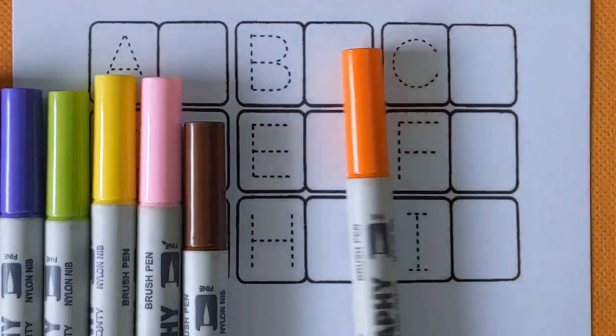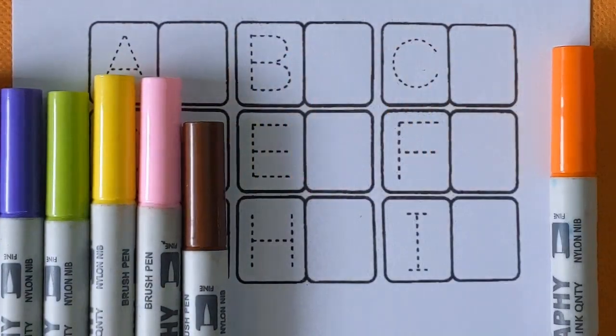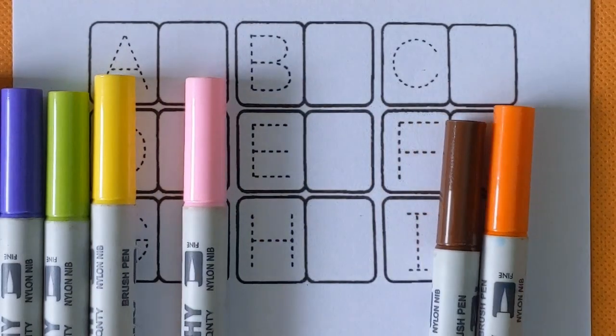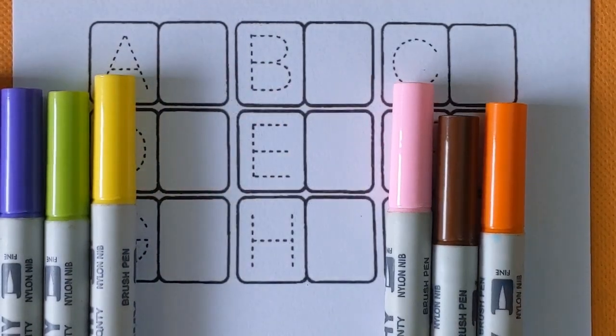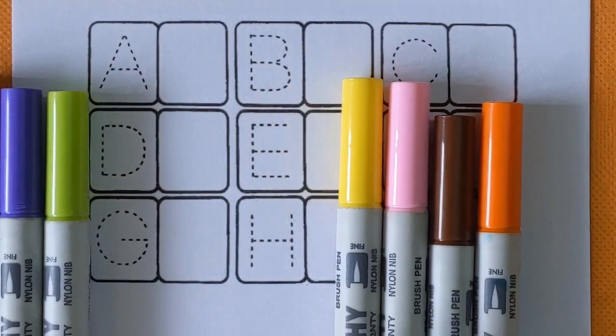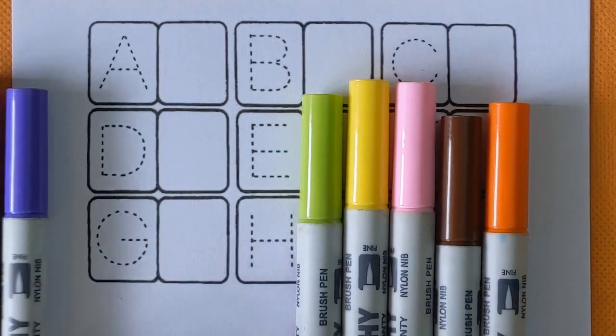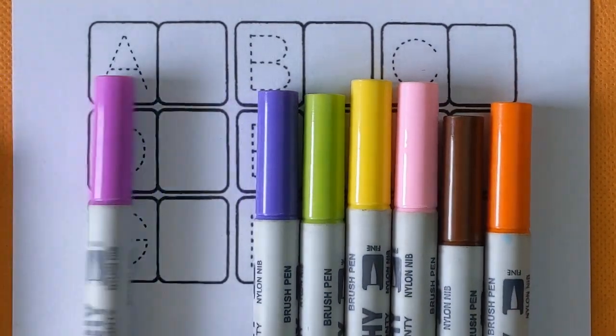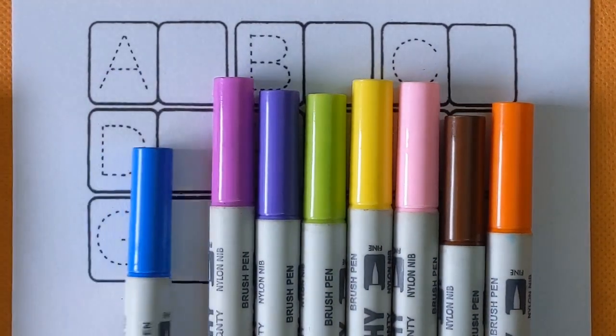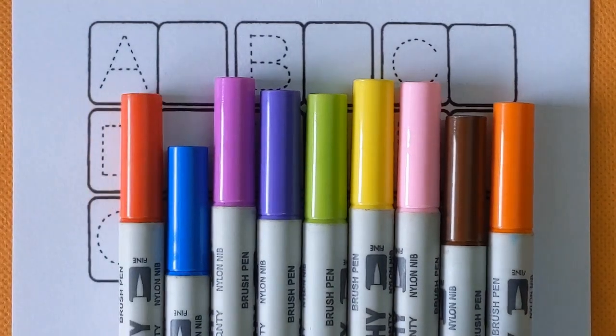At first learn some color names. Orange color, brown color, light pink color, yellow color, light green color, violet color, purple color, blue color and red color.